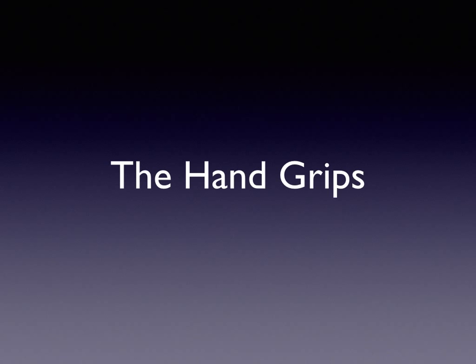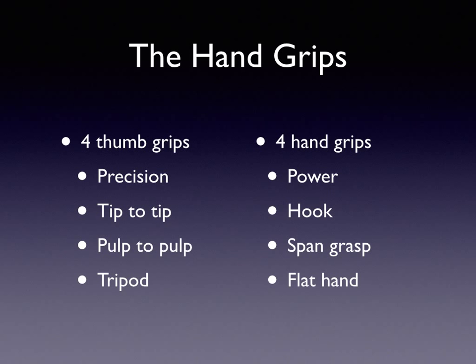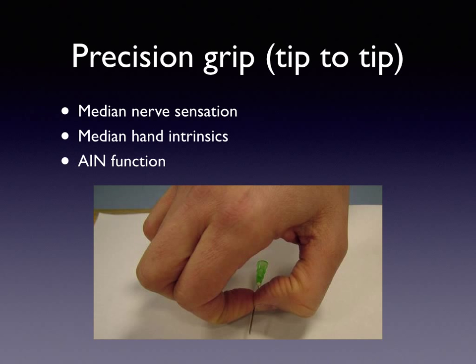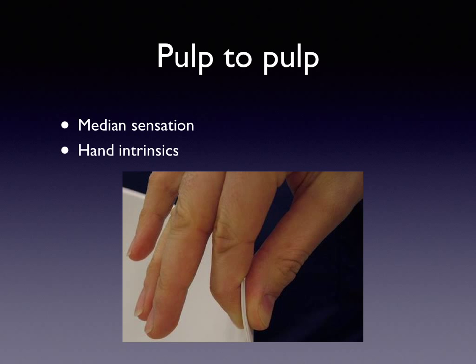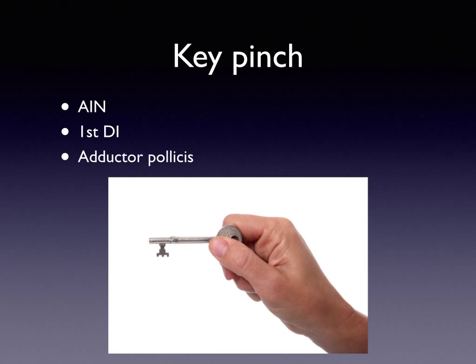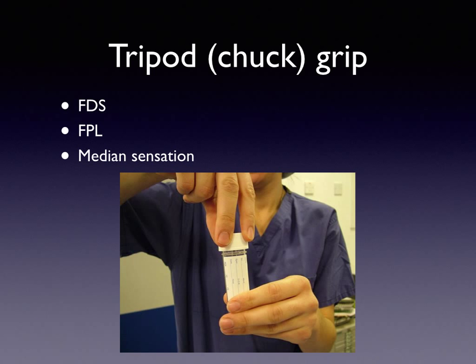A crude measure is to use the hand grips — there are four thumb-based grips and four hand grips. A precision grip is tip-to-tip between the tip of the thumb and the tip of the index finger, and requires good median nerve sensation, median hand intrinsics and anterior interosseous nerve function. A pulp-to-pulp grip requires median sensation and hand intrinsic function. A key pinch needs anterior interosseous nerve, first dorsal interosseous nerve and adductor pollicis — the ability to flex the thumb down against a stable index finger PIP joint. A tripod or chuck grip requires FDS function, FPL, median sensation, and allows us to manipulate small objects.